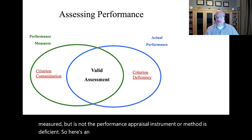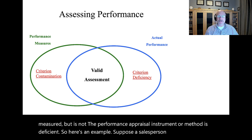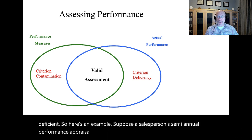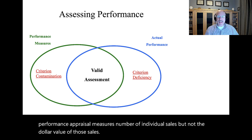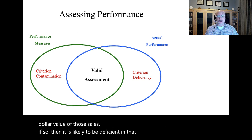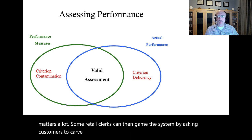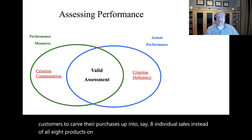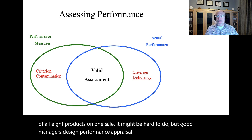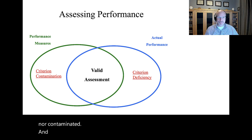For example, suppose a salesperson's semi-annual performance appraisal measures number of individual sales, but not the dollar value of those sales. If so, then it is likely to be deficient in that the dollar value of sales usually matters a lot. Some retail clerks can then game the system by asking customers to carve their purchases up into eight individual sales instead of all eight products on one sale. Good managers design performance appraisal systems that are neither deficient nor contaminated and that cannot be gamed.